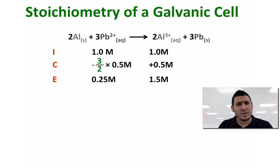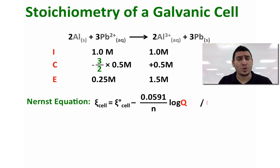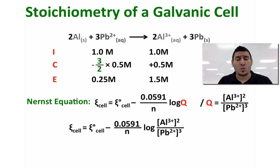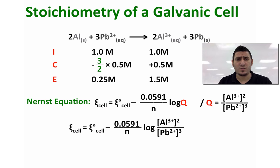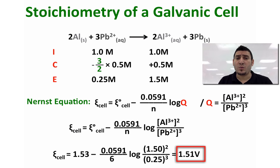To calculate the cell potential we use the Nernst equation, where Q is equal to the concentration of Al³⁺ squared divided by the concentration of Pb²⁺ cubed. Substituting every term by its value, we get the cell potential equal to 1.51 volts.